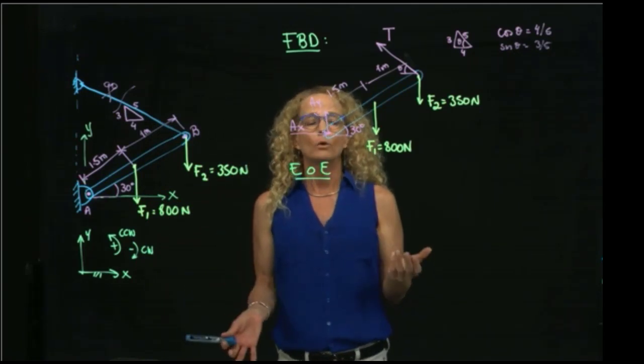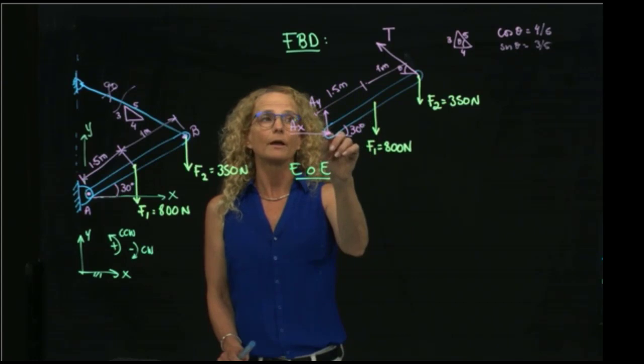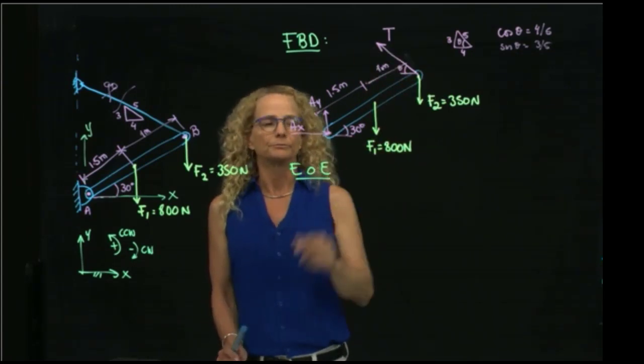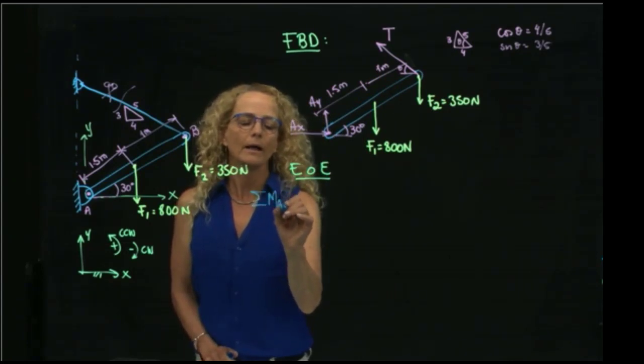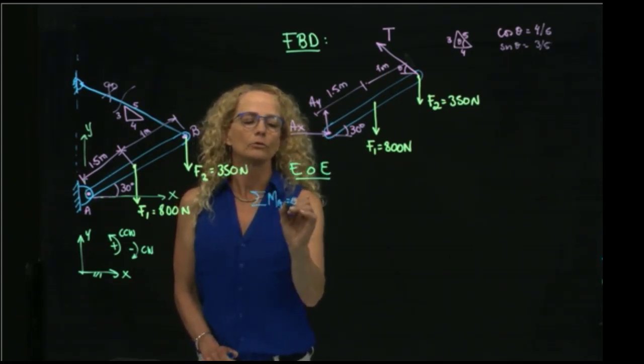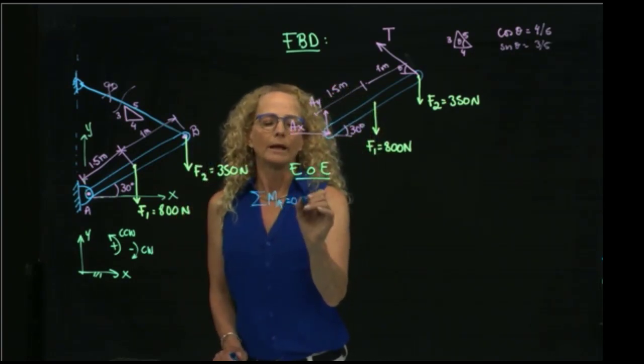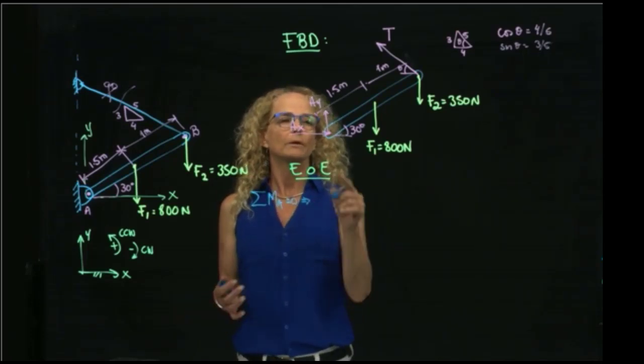So, let's start by taking moment with respect to one point, because when we take moment with respect to A, for example, we will have only one unknown, which is the tension. So, I will start by adding moments at A, and this will be equal to 0 because we are in equilibrium.